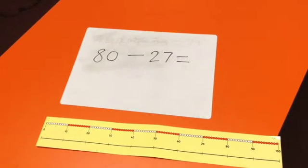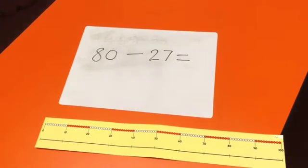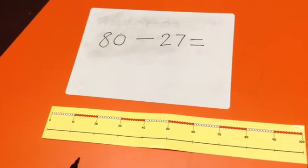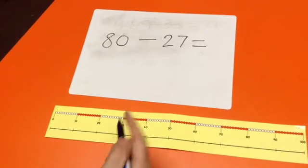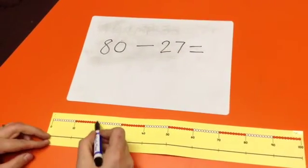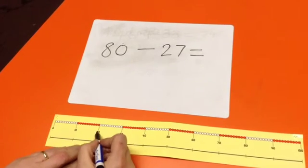We also use the jumping method when taken away from another number. The first thing you do is locate the lowest number. So, with this one, we find 27 on our bead bar. We know where 20 is, and we count up seven more.